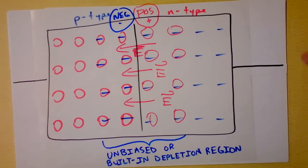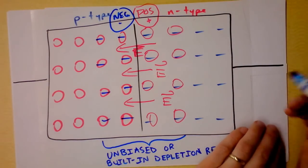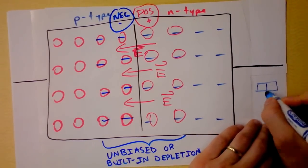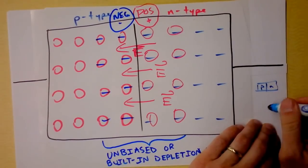We got p and we got n, and I'm saying, what if instead we connect this to a voltage source? So I'm going to make a little sketch of what we have, p here and n here.